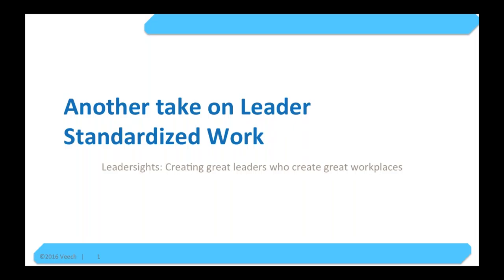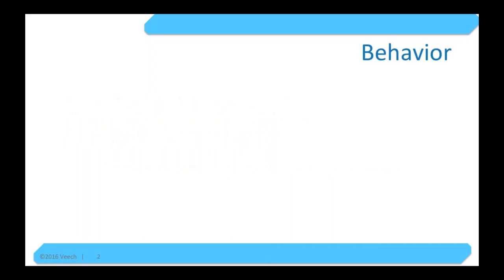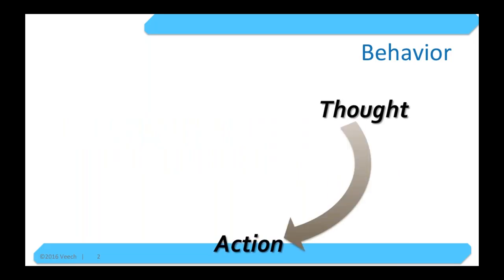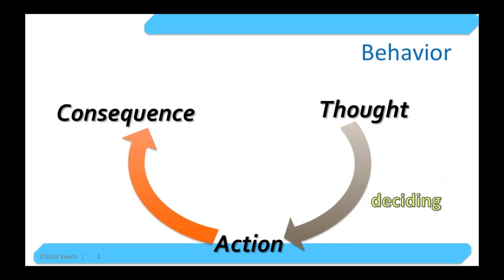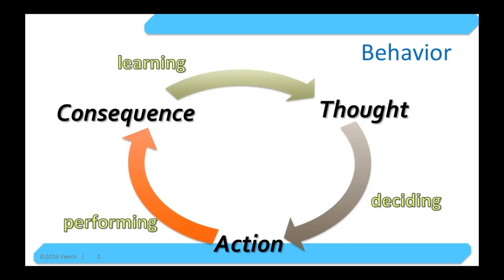So I'm going to start with a little study on behavior. Behavior is action — it's action-oriented stuff. Every action, according to scientists, is preceded by some kind of conscious thought, however fleeting. We'll call that the deciding cycle. Sometimes the way we think isn't guaranteed to deliver the right kind of action. After the action there's always some kind of consequence — some kind of result in this performing piece of the cycle. Based on that consequence, if we as humans take time to reflect on what we did and how we thought about it, we ought to be able to learn something. I've got this learning loop that shapes our thinking.